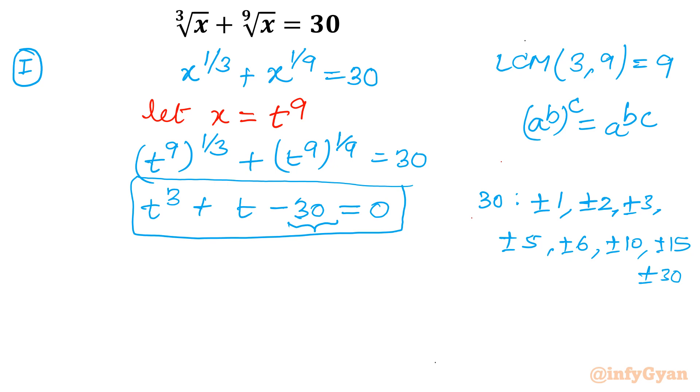Among these factors we will have our one root. So how we can check? We can check by putting the values. So randomly if I will check plus minus 1, plus minus 2 won't satisfy. Let me put t equal to 3. As you can see, 3 cube is 27, so plus 3 minus 30. This is satisfying the equation. So t equal to 3 is our base root or first solution.